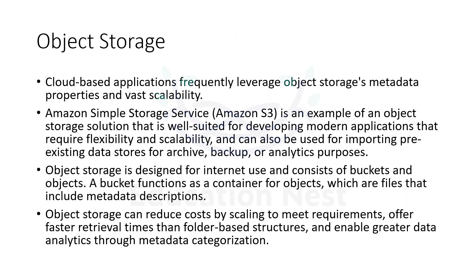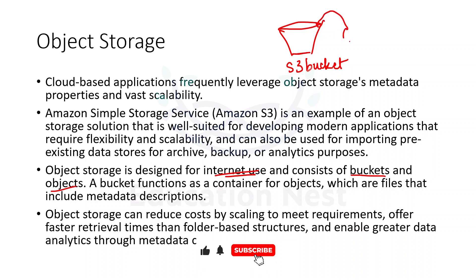The next type of storage is object storage. Object storage is designed for internet use. Specifically for AWS, it consists of buckets and objects. We have an S3 bucket on AWS, which is a container in which we can store our objects.